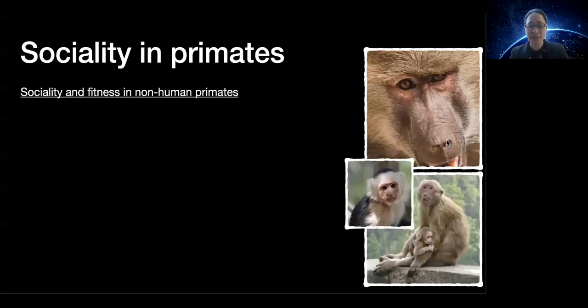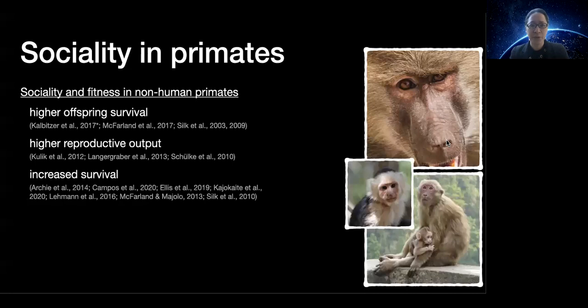The past few decades has amassed a large body of literature showing links between sociality in non-human primates and biological fitness. In baboons, macaques, and capuchins, for example, various aspects of sociality such as relationship quality or connectedness have been shown to map onto higher offspring survival, higher reproductive output, or increased survival.